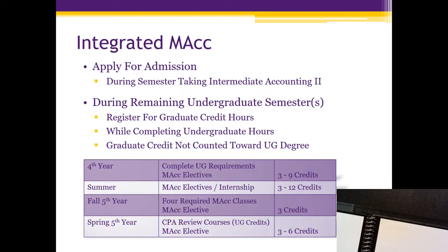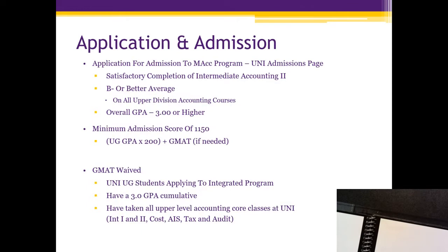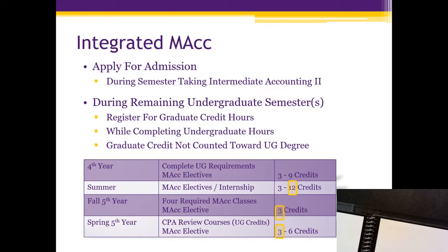In your fourth year you might finish up and get three to nine undergraduate credits during summer, up to 12 — think internship, or the REN program plus two classes. In your fifth year, you take your four required classes plus three electives. During fifth year you also do your CPA review, which is undergraduate credits, so if you still need a few more credits to reach 120, you can use CPA review classes. Then you take one or two more electives, and occasionally a student needs a May term class.